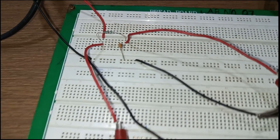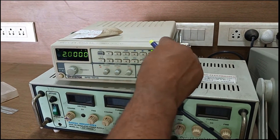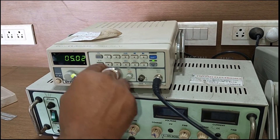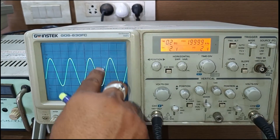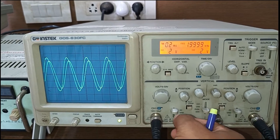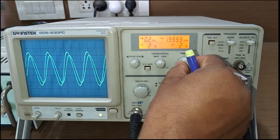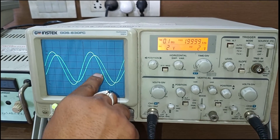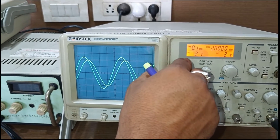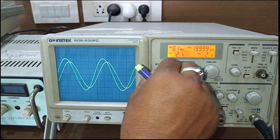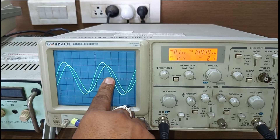Let us calculate for 2 kilohertz frequency. You can see here it is set to 2 kilohertz and the voltage is 5 volts, that is 10 volts peak-to-peak. Channel 1 is the input signal and Channel 2 is the output signal. I'll put this into the dual mode and ground both input signals, set to AC. From the DSO, capital T starts from here and ends here — it is 1.3 divisions.